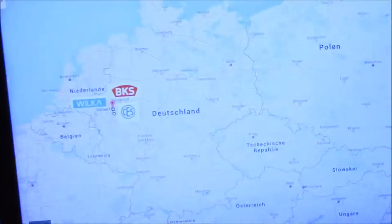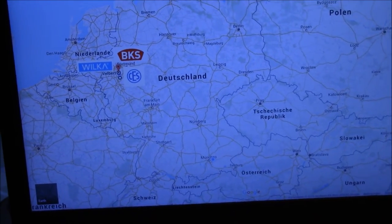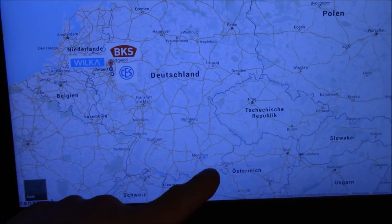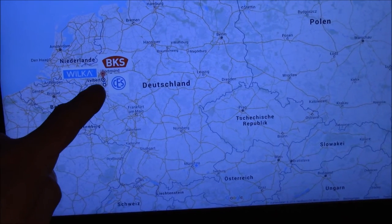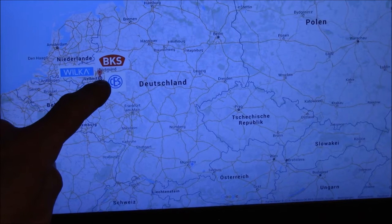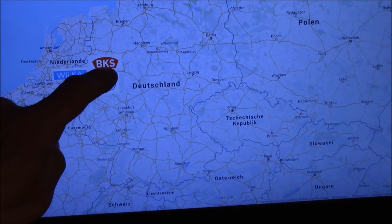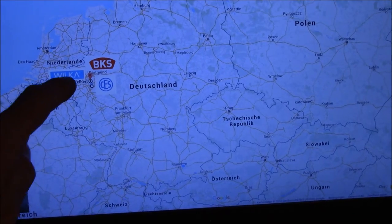Velbert is actually the home of two other well-known lock companies and here I have a map from Germany. For your orientation here is Munich, that's about where I live, and here is Dortmund and Frankfurt and here we have Velbert and you can see BKS has its headquarter there, CES and Wilker.